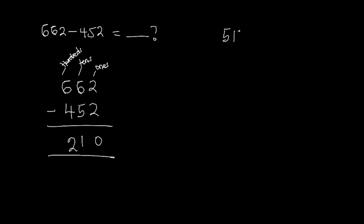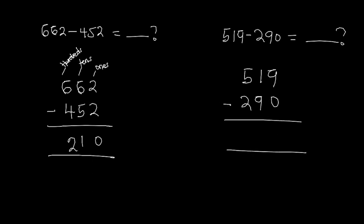Let's look at another example: 519 minus 290. We write 519 on top and 290 below with a subtraction sign. Starting with the ones: 9 minus 0 gives 9, nothing taken out. Moving to the tens: 1 minus 9 is not possible — I have 1 orange but need to give out 9, so I must borrow from the hundreds column.